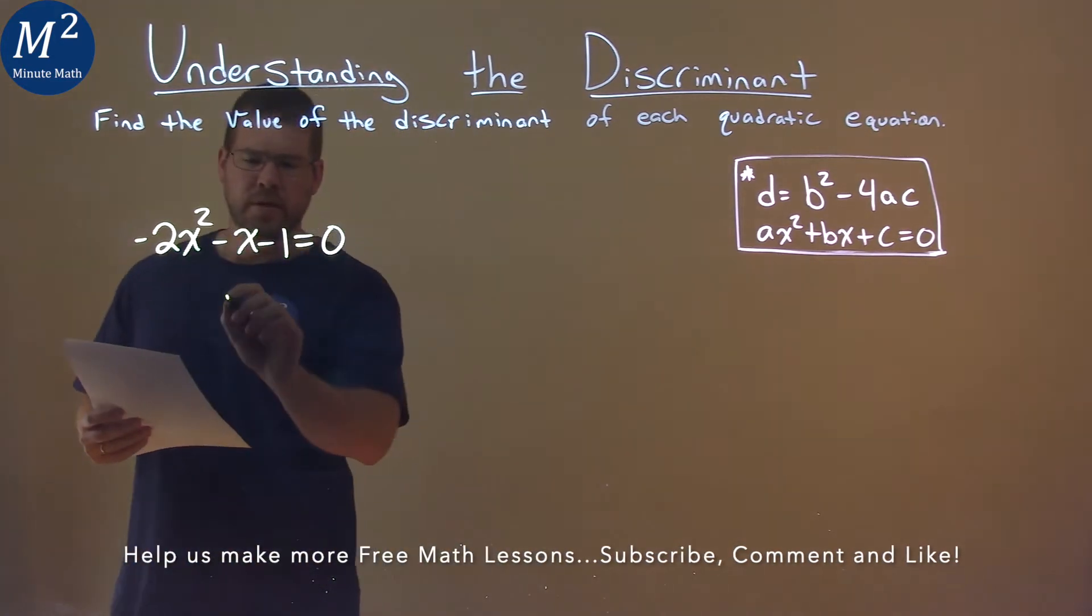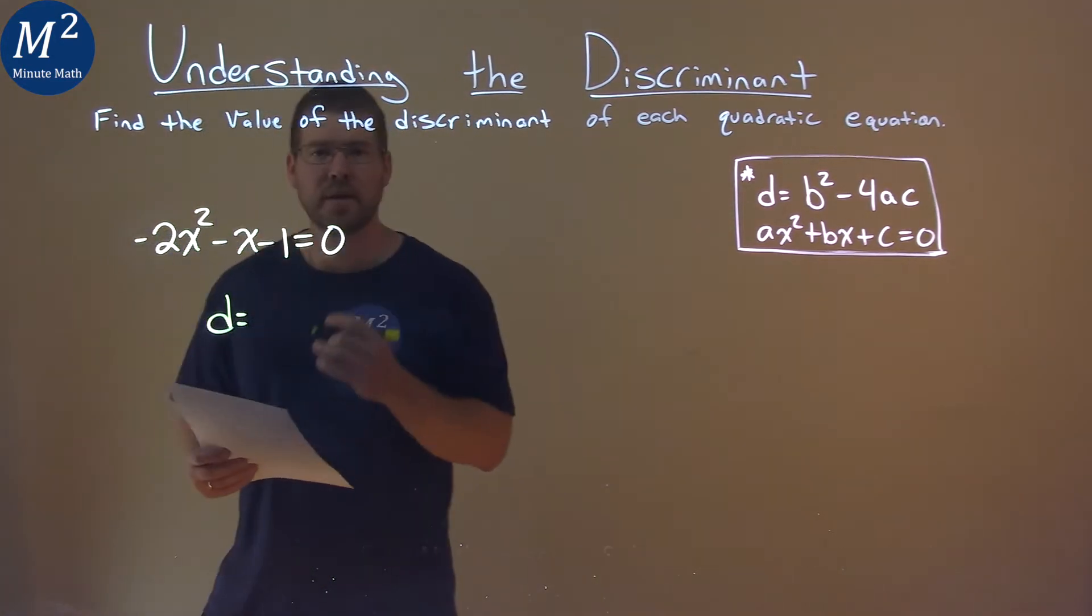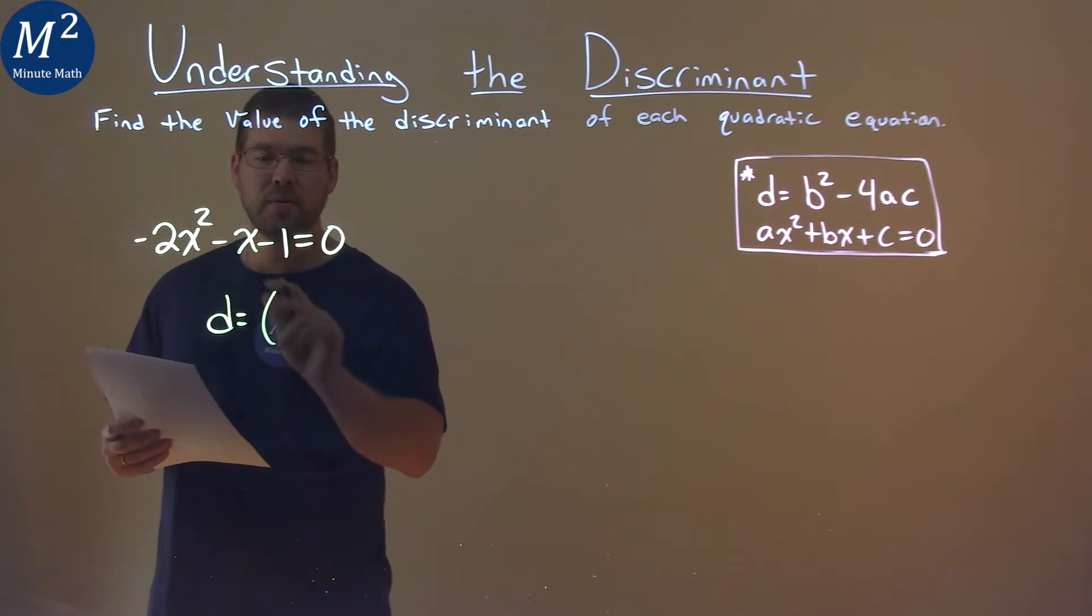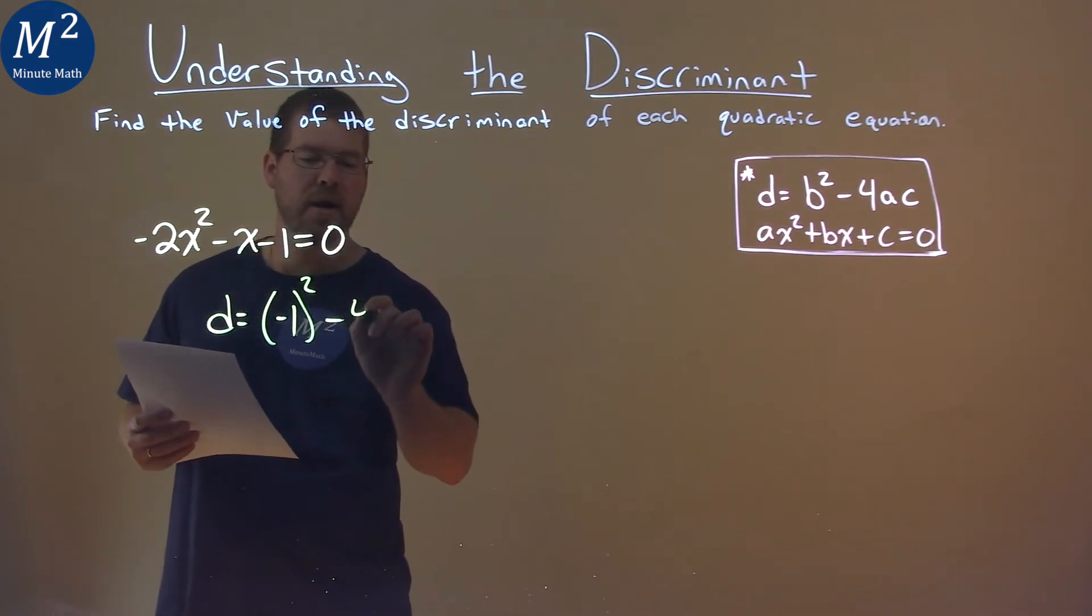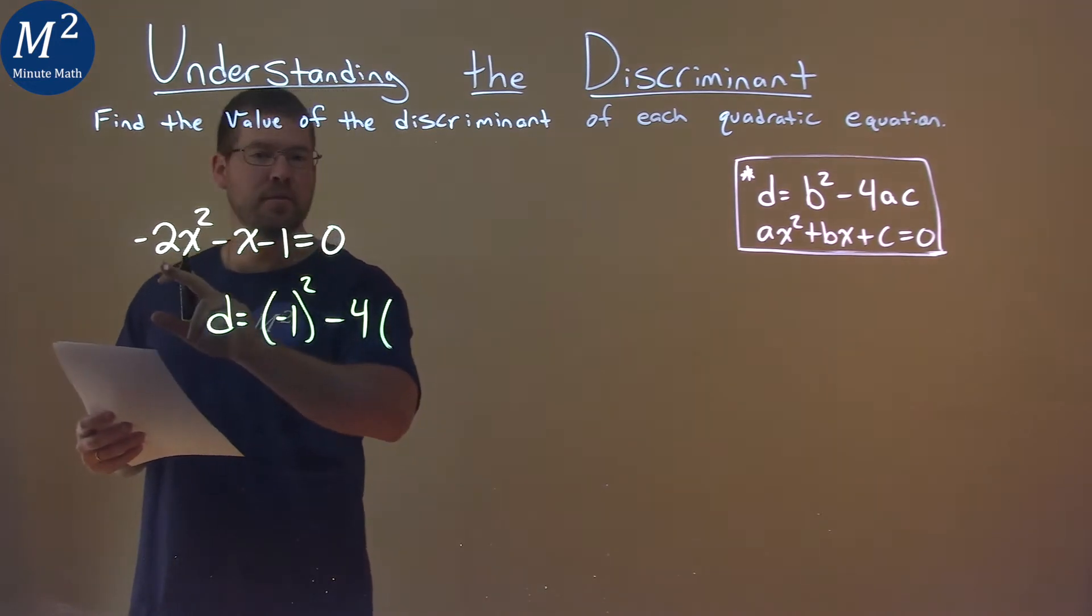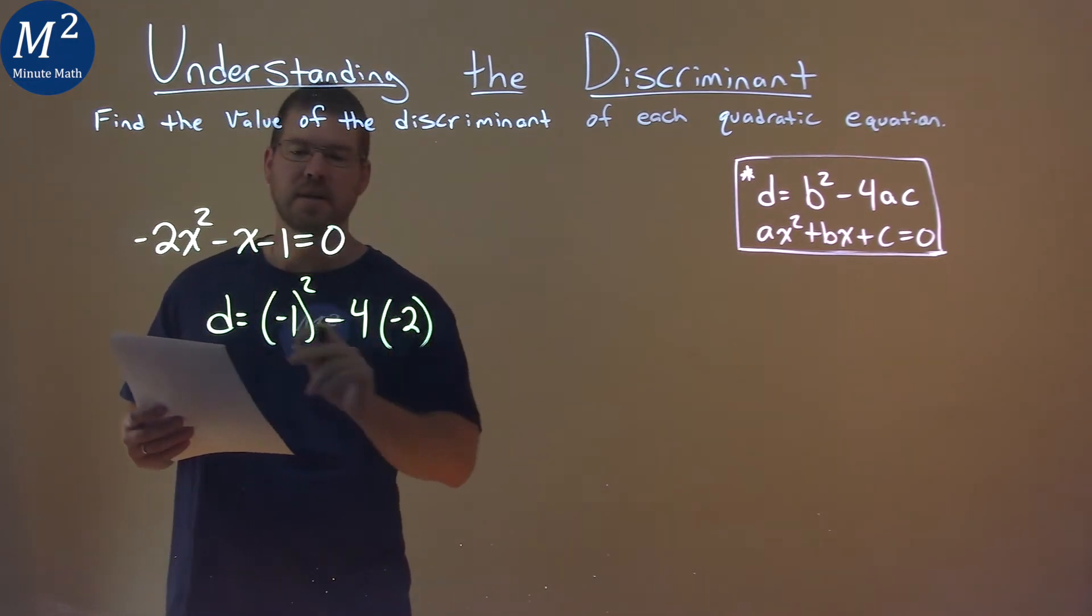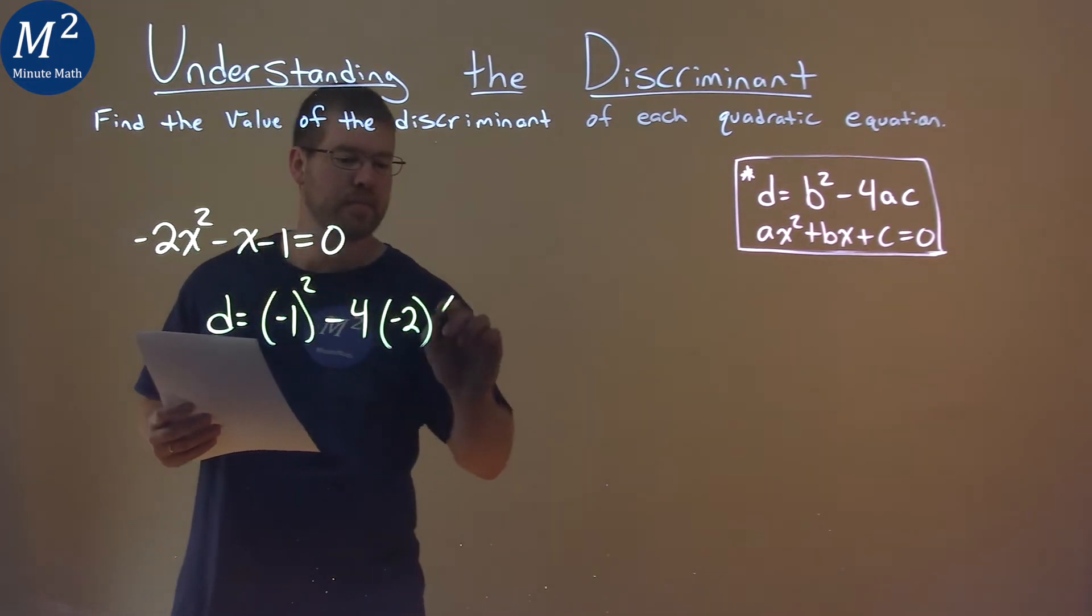Well, I'll use my formula here. The discriminant is equal to our b value, which is negative 1, squared minus 4 times our a value, negative 2, times our c value here, a negative 1.